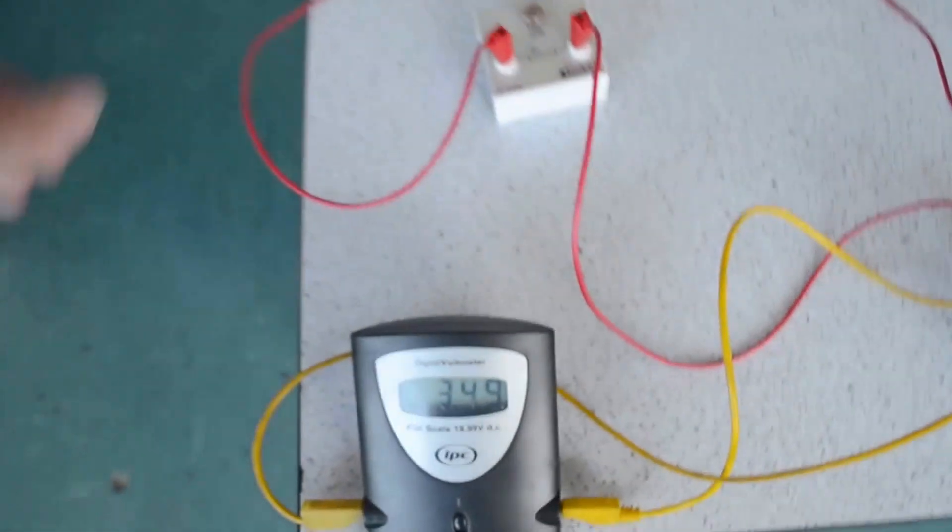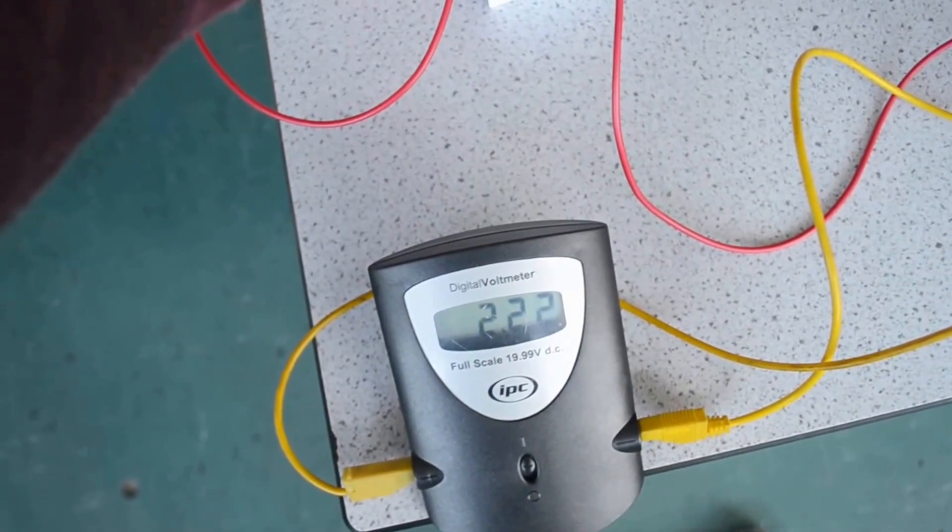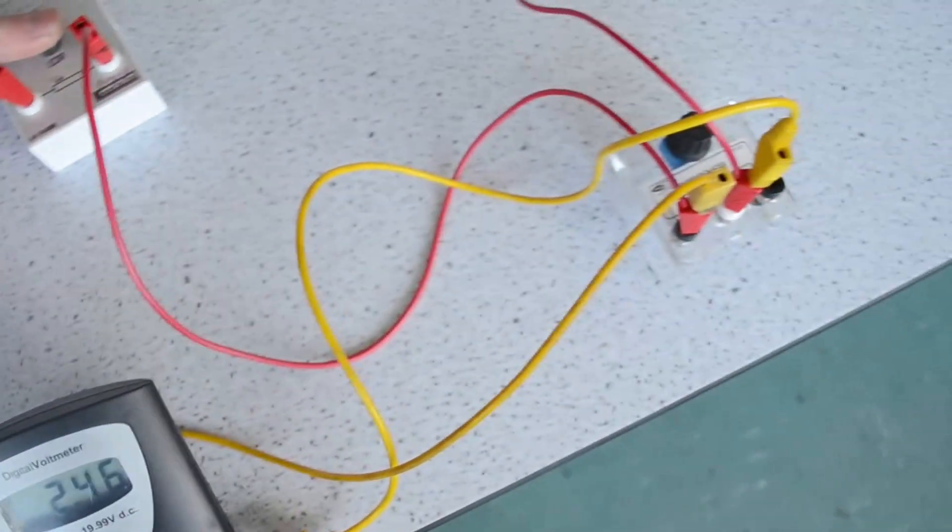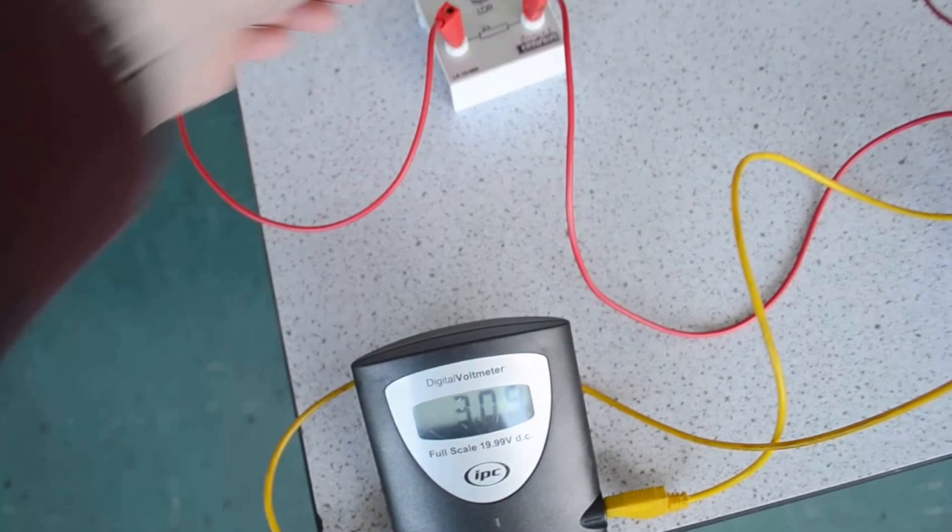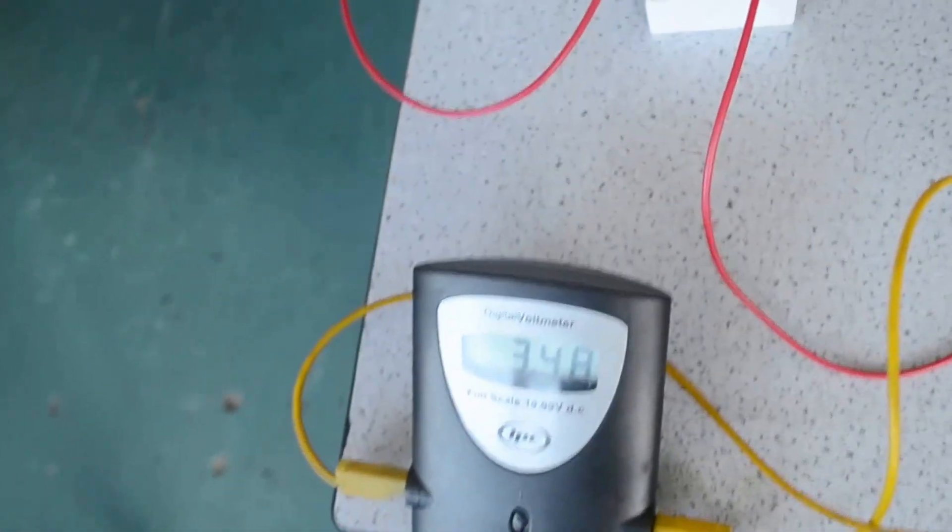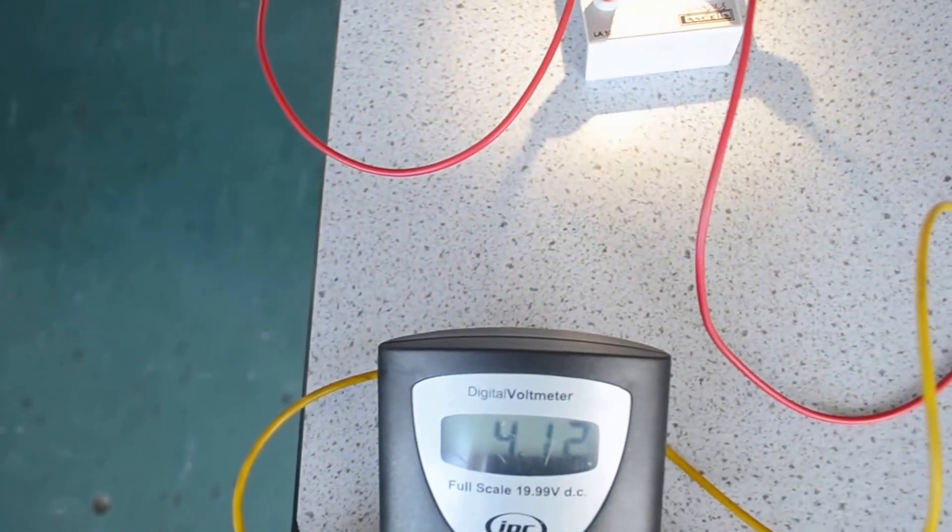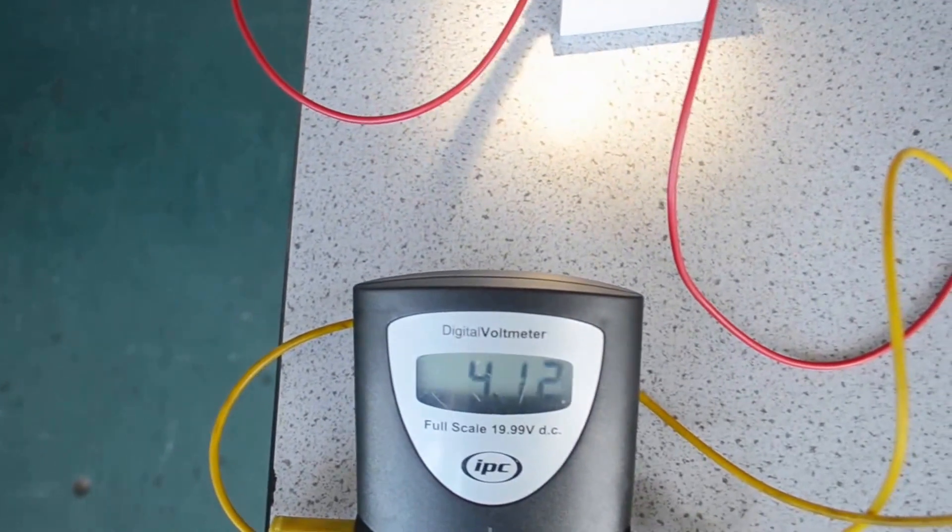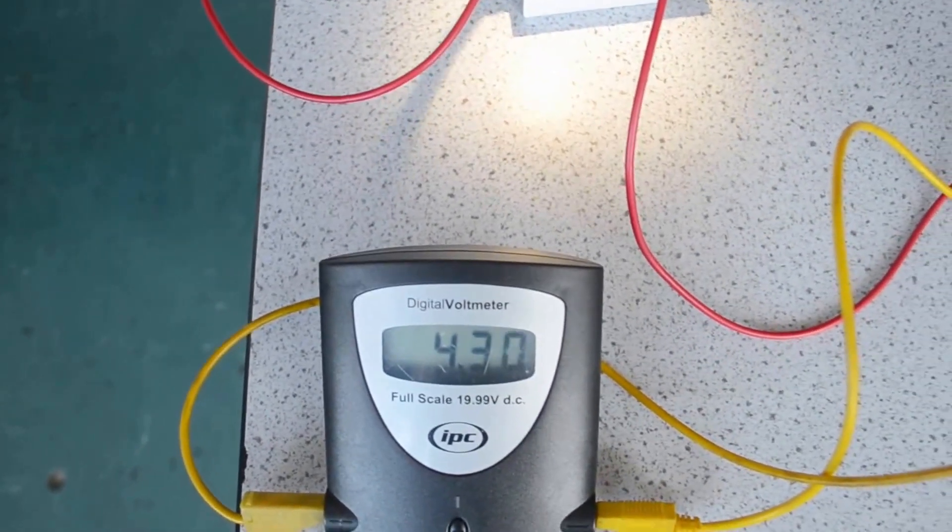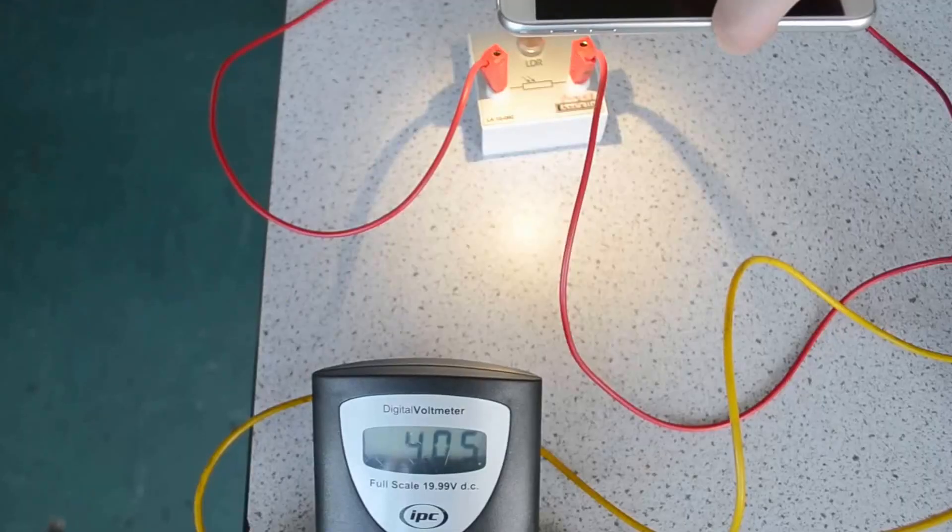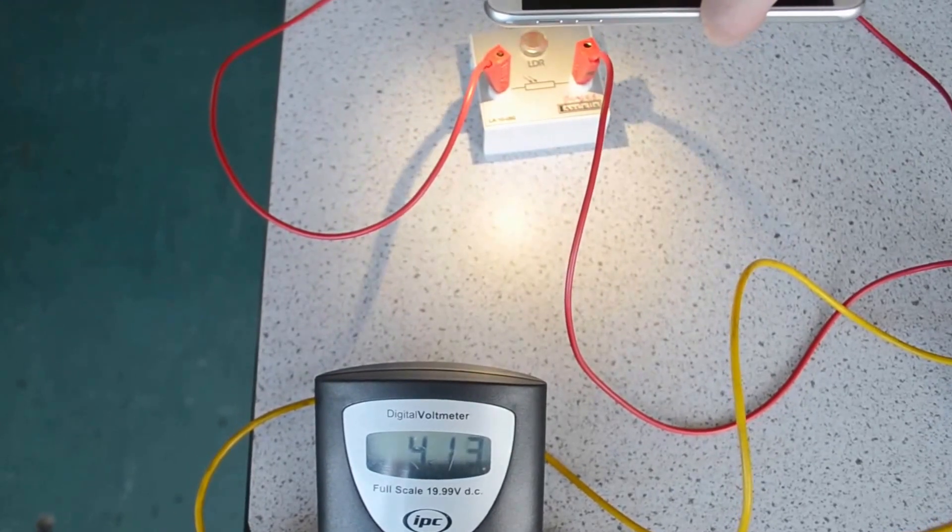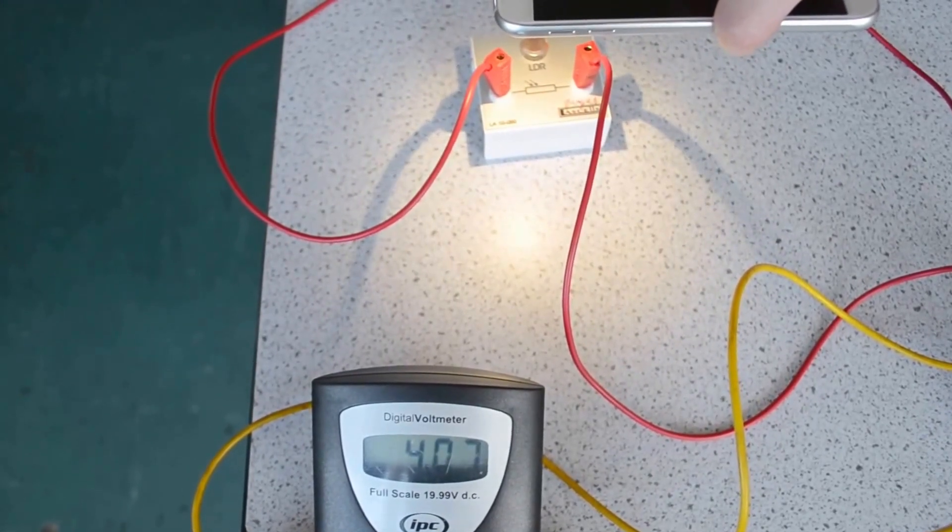We try that again. If I cover up the LDR, now the voltage, now measured across the fixed resistance, drops. Or if I shine a bright light on the LDR, the resistance across it decreases, so the voltage across the other resistor increases. So we now have a circuit where the voltage output is proportional to the light level shining on the LDR.